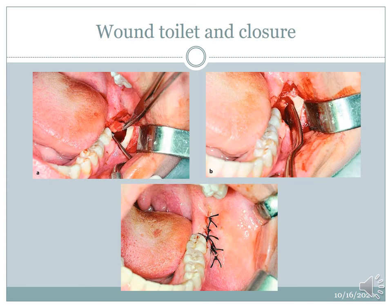After tooth removal, the wound is cleaned with betadine solution, then irrigated. Check for sharp bony margins — a bone file is used to trim any sharp margins, since bone cutting with the burr can leave a ledge of bone. After trimming, suturing is done with 3-0 vicryl or 3-0 silk.